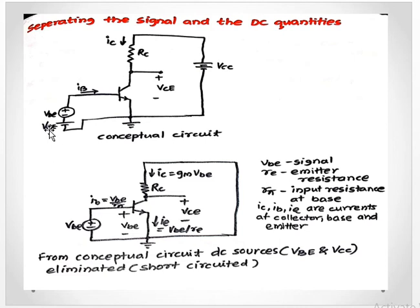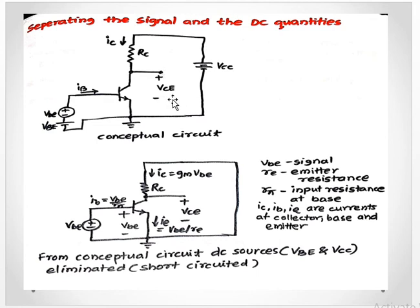When the signal source is removed, we analyze using the small signal model. DC sources VBE and VCC are removed — this is the first step to get the small signal model of a circuit. DC sources and capacitors need to be short circuited; VCC and VBE are short circuited. Since capacitors are not indicated they are not short circuited, and any current sources need to be open circuited, similar to MOSFET analysis.